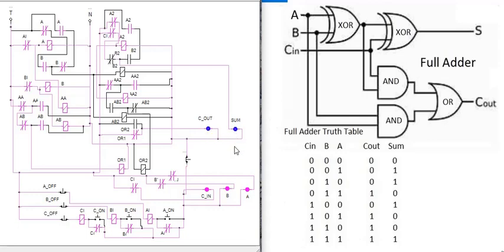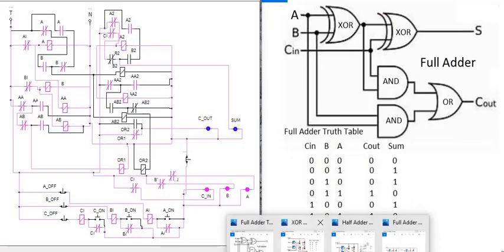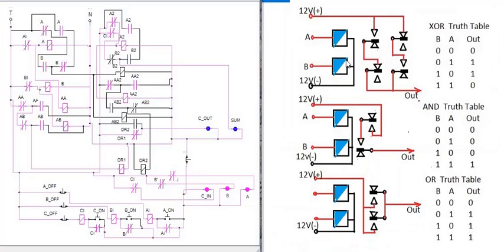With C-out high and Sum high, this full adder circuit is running well in simulation. Now, how do we make this using relays? These are the gates required: XOR gate, AND gate, OR gate, and exclusive OR gate. In an OR gate, when both inputs are high, output is 1, but in an XOR gate, input 1 1 gives output 0. This is the difference between XOR and OR gate. This relay-to-relay connection makes the gate.